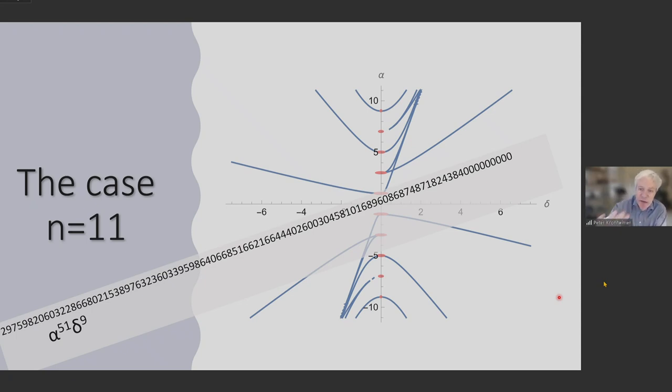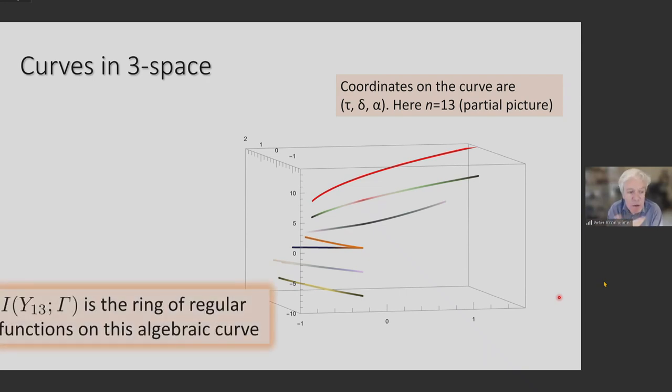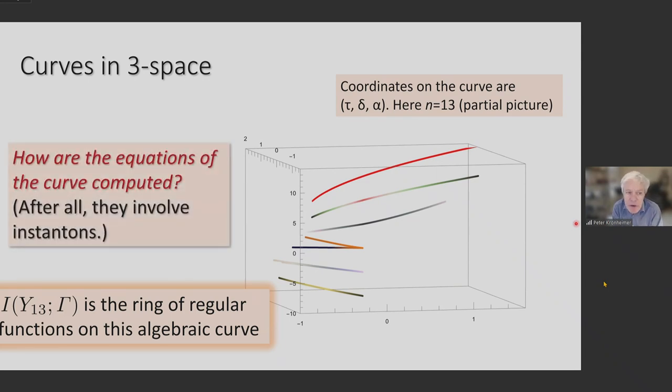And that blue curve is the projection to the alpha delta plane for getting the tau coordinate. If you take a space curve and project it to the plane, the equation gets a whole lot more complicated. And that's kind of somehow why the polynomial alpha delta is so horrific. This is the next case of n equals 13, a partial picture of the curve. But now in three space, the coordinates are slightly different. But basically, this is in three space with coordinates tau delta and alpha describing this algebraic curve. So if n equals 13, this is the object we kind of really want to study. This instanton homology with local coefficients. And what it is, to say things another way, it's just the ring of regular functions on this algebraic curve in three space. So to describe this instanton homology, we need to understand what is this curve, what are its equations, what characterizes it.